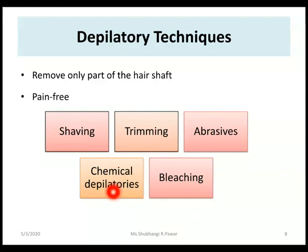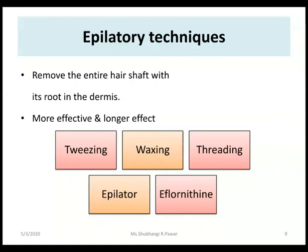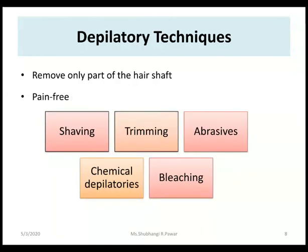The next method is chemical depilators. These depilators dissolve hair fibers, causing the hair to break down, which can then be easily washed away from the skin. Products in this category include gels, lotions, creams, and aerosols. The next technique is bleaching. Bleaching is also referred to as a hair removal technique, but it does not remove any part of the hair shaft — rather, it changes the color of the hair. These are the main five depilatory techniques used for hair removal.